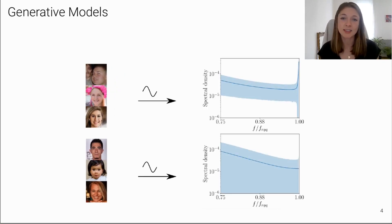However, when we analyze the generated images in the frequency domain, we discover that the spectral statistics do not match those of the real images. In particular, there is a peak at the end of the spectrum, so at the highest frequencies, which makes it straightforward to distinguish between real and generated images.